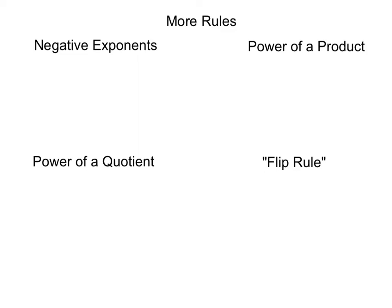I want to discuss a few more rules that we'll see when dealing with exponents. The first one here is negative exponents. What happens if you have something like a raised to the negative n? If you have a particular number raised to a negative exponent, what you're going to do is take that whole thing and drop it to the other side of the fraction to make it positive.